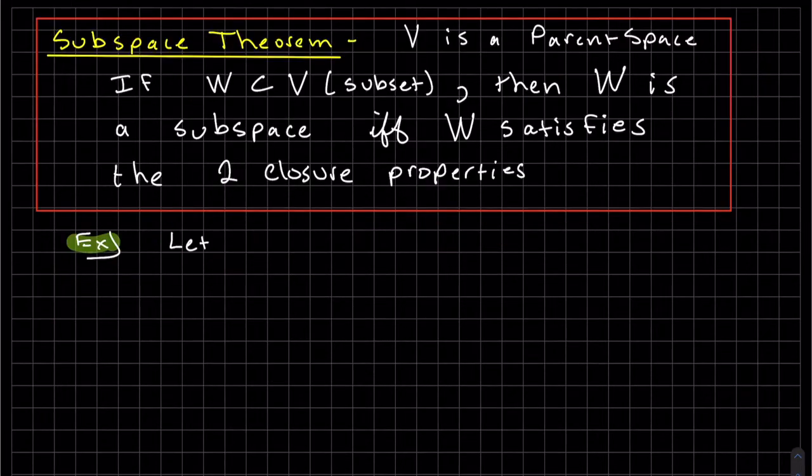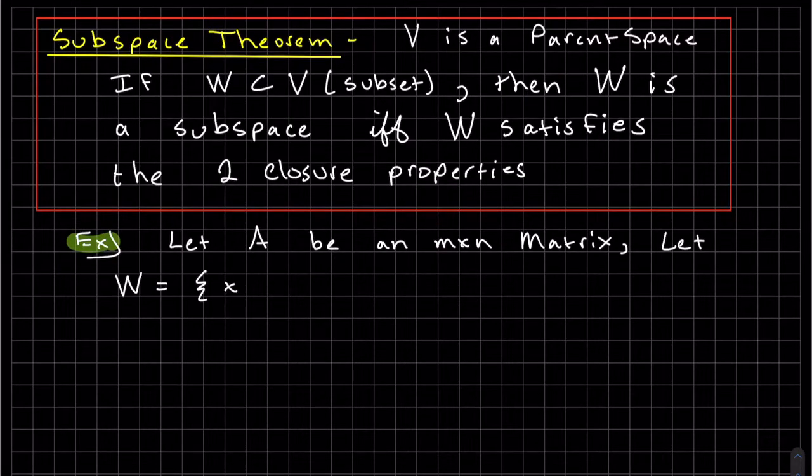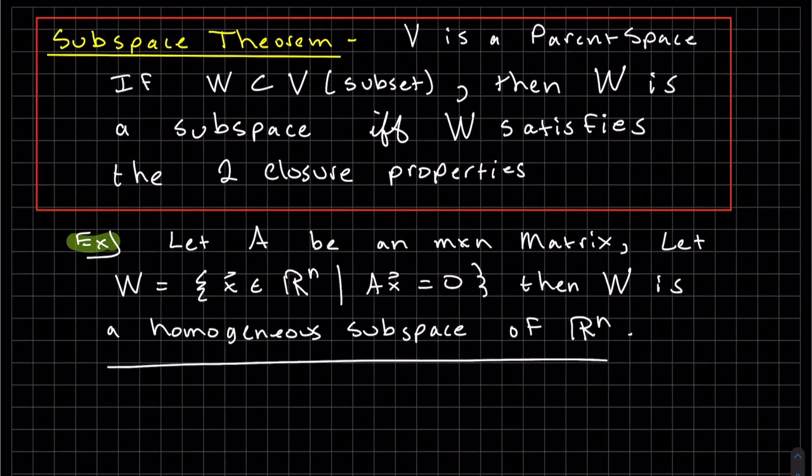Let's do another example. A is an M by N matrix, and W is the set of vectors X in R^N such that AX equals 0. Then W is a homogeneous subspace of R^N. It's a homogeneous subspace because of that 0.